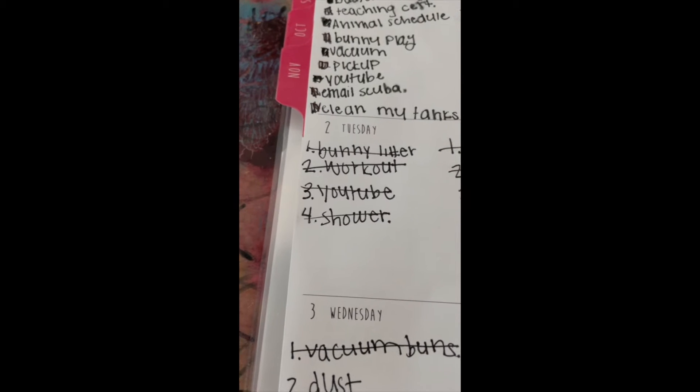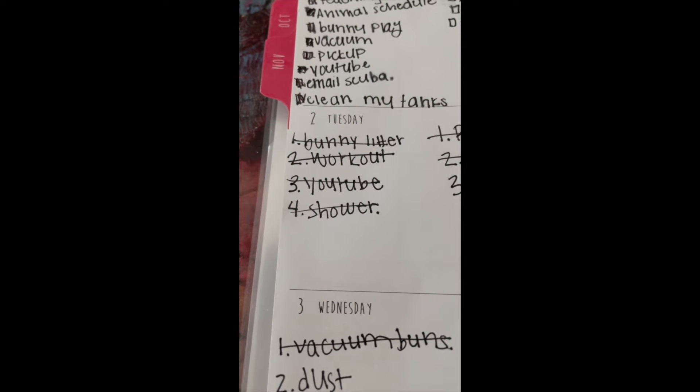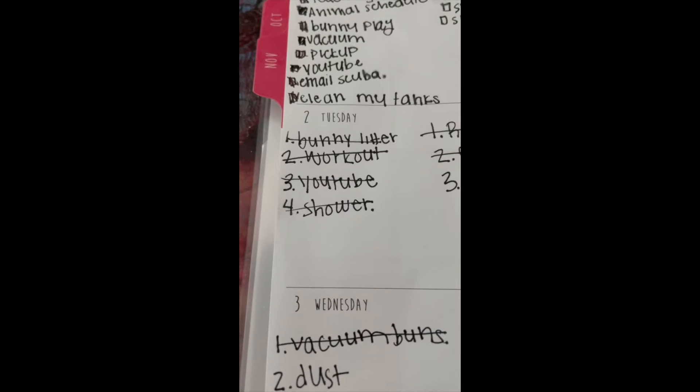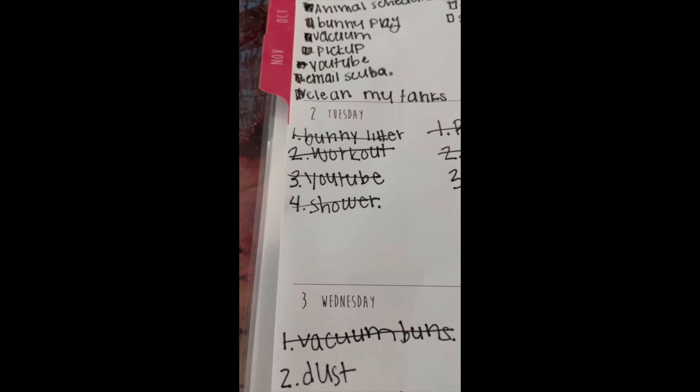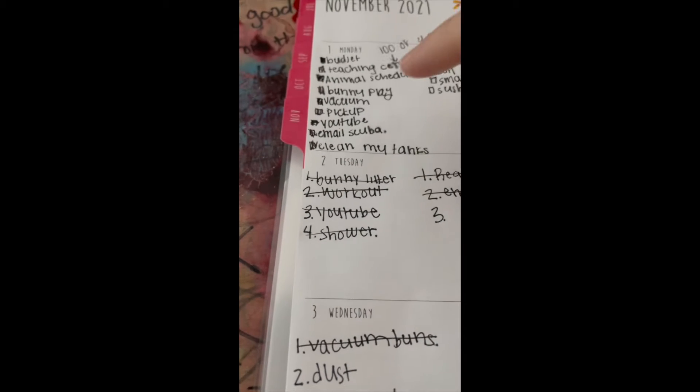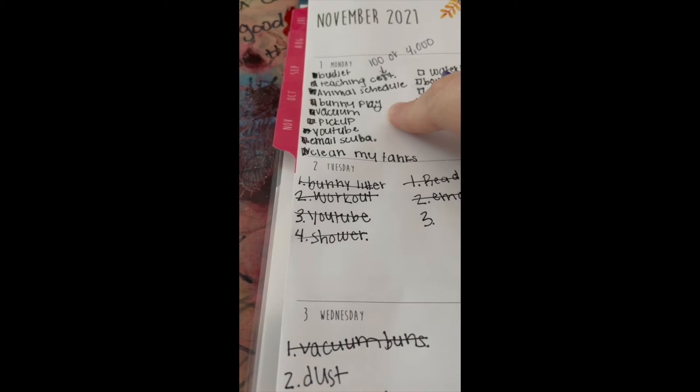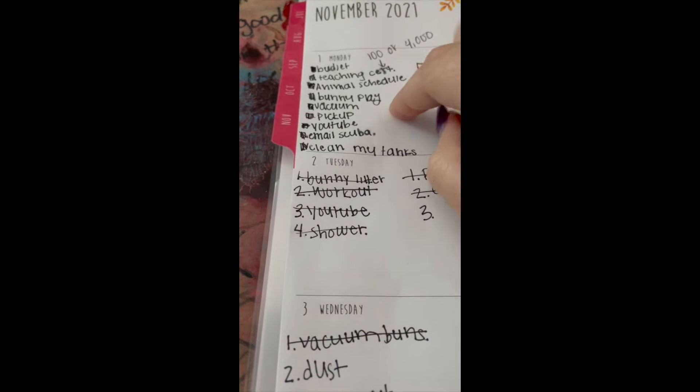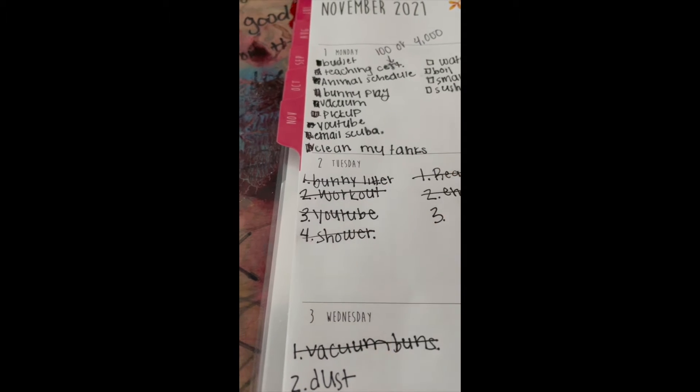For my four to-do lists, I put one animal task, one cleaning task, one goal, and one task for myself to complete. And then on my off days, I will just try to get everything that was on my task list done for the rest of that day.